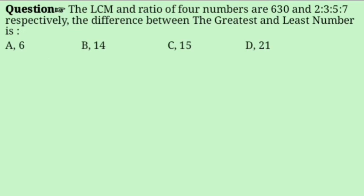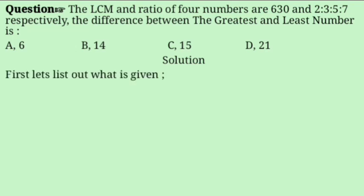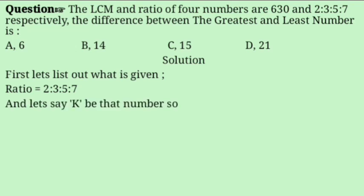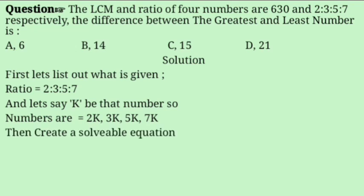Next question: the LCM of 4 numbers is 630, and the numbers are in ratio 2:3:5:7. What is the difference between the greatest and the least number? Let K be the common factor, so the numbers are 2K, 3K, 5K, and 7K.